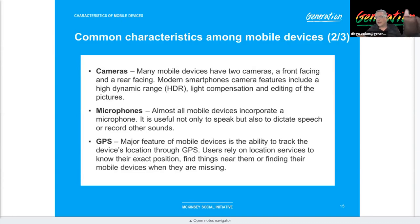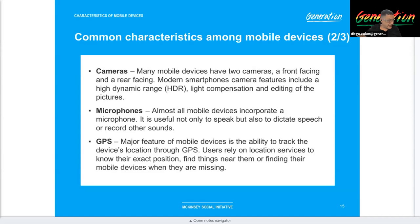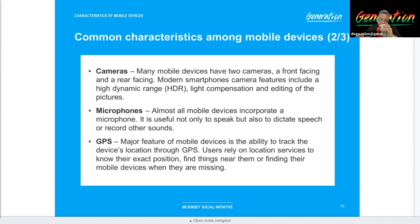Even if your GPS goes down completely, phones can use radio or Wi-Fi to triangulate an approximate location. It's not as accurate, but it can still help. So when you're in heavy rain and get some data connection, that's why you see a large circle around your dot on the map — it's not able to perfectly triangulate your location.